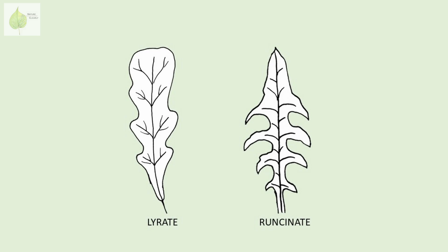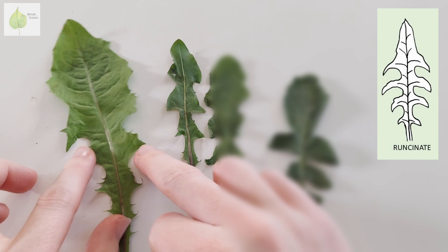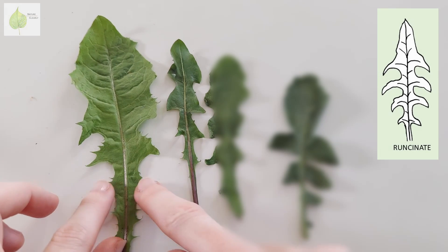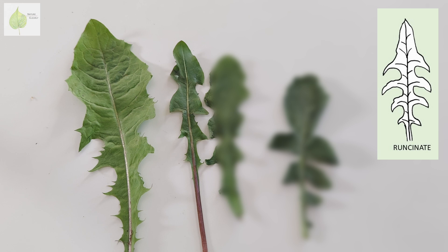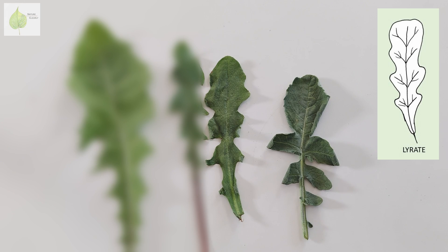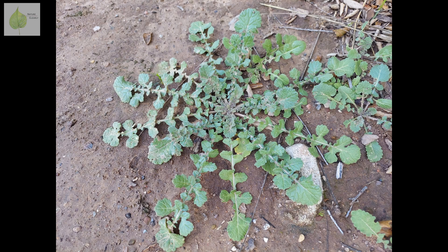Next is the easiest category to remember, containing lyrate and runcinate leaves. With runcinate leaves, think of a common dandelion — the leaves have many teeth or lobes pointing downwards towards the base. The lobes or segments of lyrate leaves are round, and the biggest lobe is the terminal one. Lyrate leaves are typical for many plants in the family Brassicaceae.